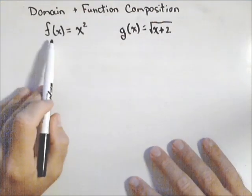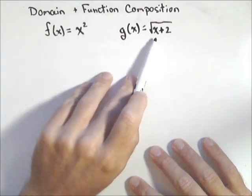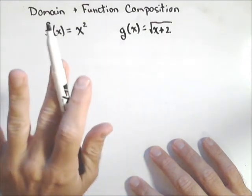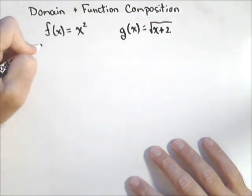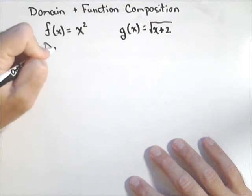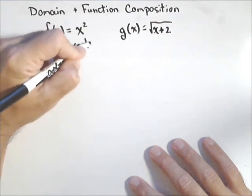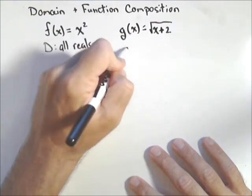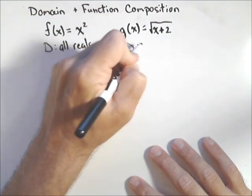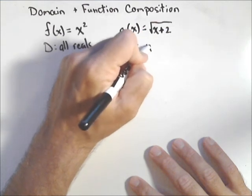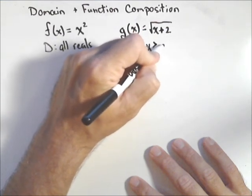So I've got two functions here. I'm going to use x squared for f and square root of x plus two for g. So first, let's just identify their domains. The domain of x squared is all reals. The domain of g(x) is that x has to be greater than or equal to negative two.